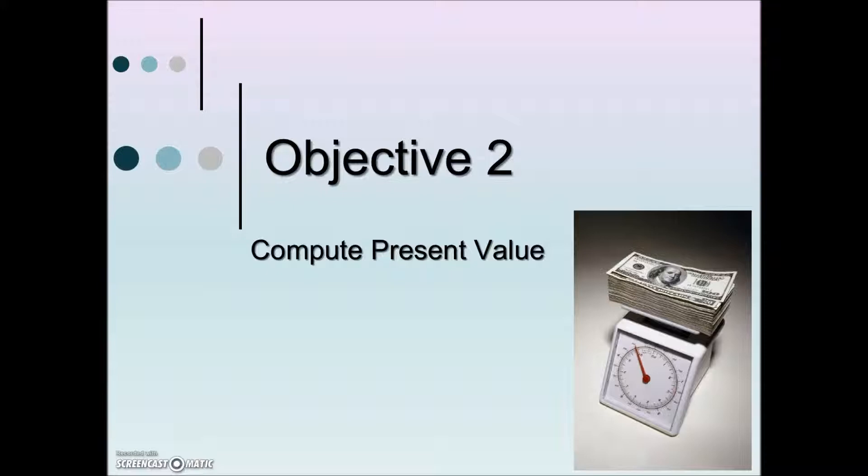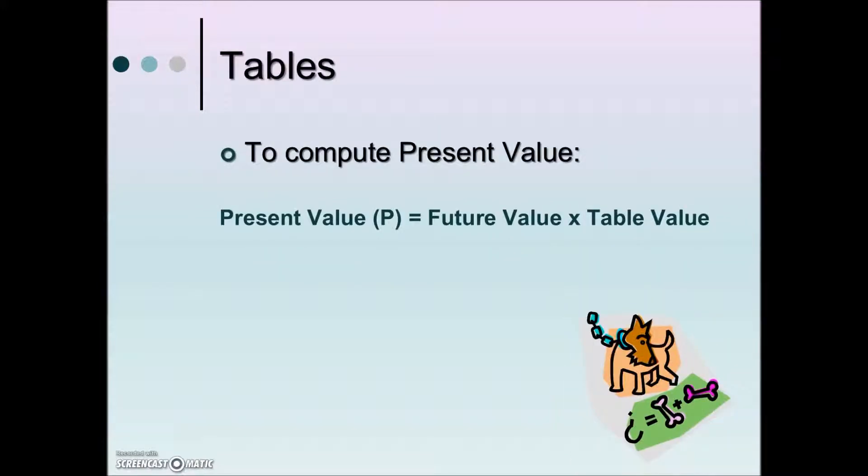So how does one compute a present value? We're going to use a table very similar to what we did for calculating compound interest. We will use a present value table where we will take our future value, our goal, and multiply it by a value from the table.